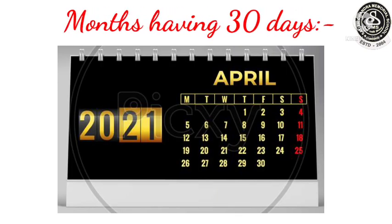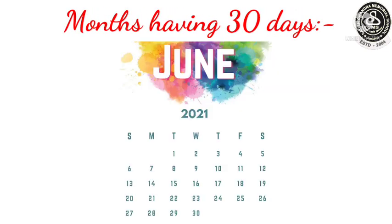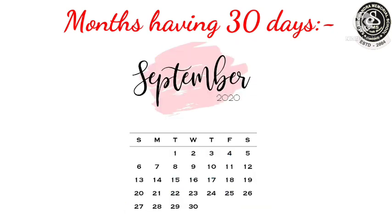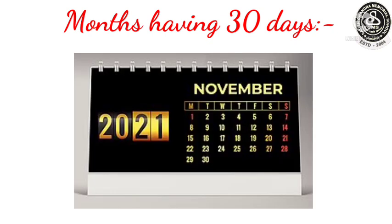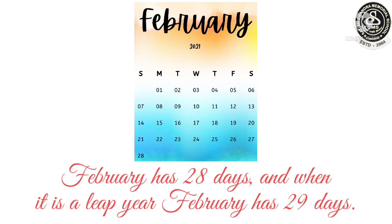Now, months having 30 days: number 1, April; number 2, June; number 3, September and November. And 1 more month is left, that is February. February has 28 days, and when it is a leap year, February has 29 days.